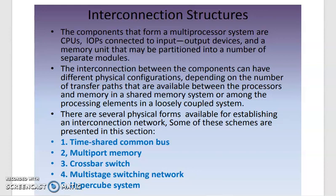The components that form a multiprocessor system can have different physical configurations. Depending on the number of transfer paths available between the processors and memory, it is called a shared memory system, or among the processor elements it is called a loosely coupled system.